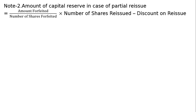Before the journal entries, note the partial reissue concept for Capital Reserve. Note 2: Amount of capital reserve in case of partial reissue = (Amount forfeited ÷ Number of shares forfeited) × Number of shares reissued − Discount on reissue. 200 shares × ₹7 = ₹1400 forfeited. So: (₹1400 ÷ 200) × 100 − ₹400 = ₹700 − ₹400 = ₹300. Capital Reserve = ₹300.